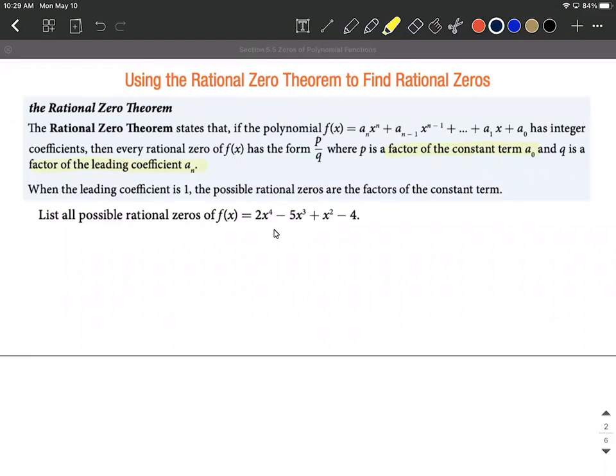Next, let's look at an example where we list all possible rational zeros. We're not going to test them on this one—you don't always have to. Sometimes questions simply ask what the possibilities are. Looking at this polynomial,